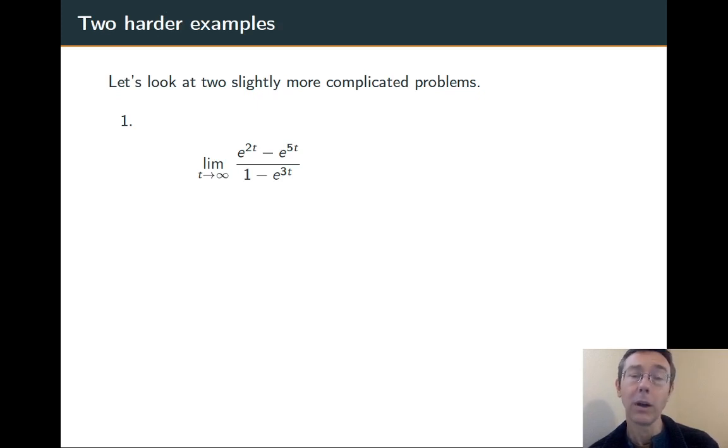Let's do two slightly harder problems. Number one: limit as t goes to infinity of (e^(2t) - e^(5t))/(1 - e^(3t)). We're going to do this like we did for rational functions—one polynomial divided by another. In that case, we looked for the highest power term in the denominator and factored it out of both the numerator and denominator.